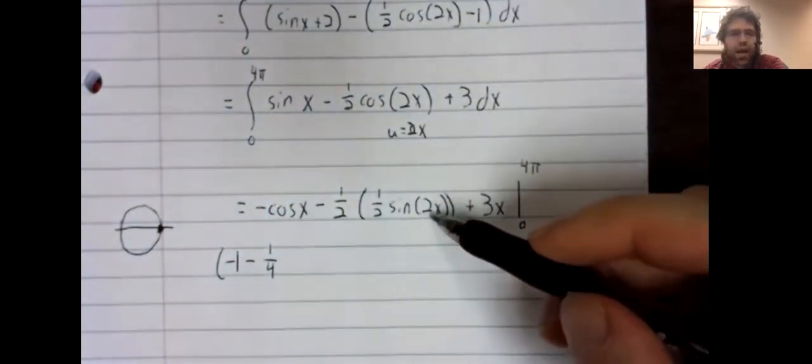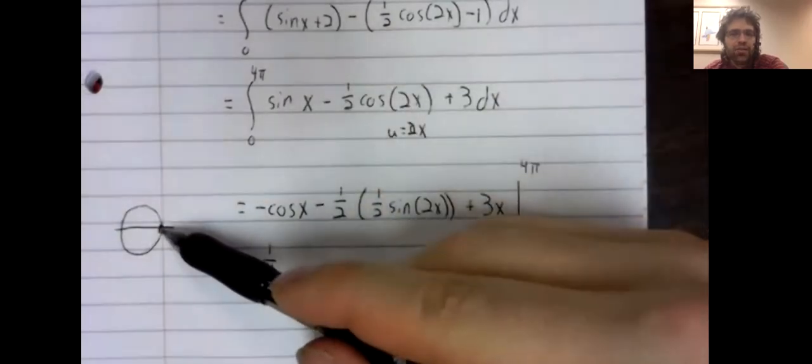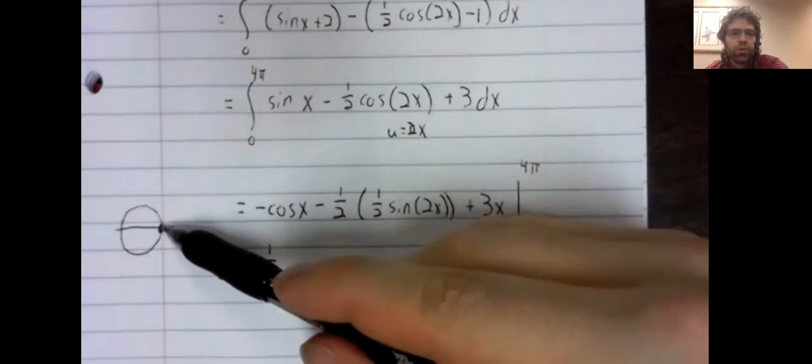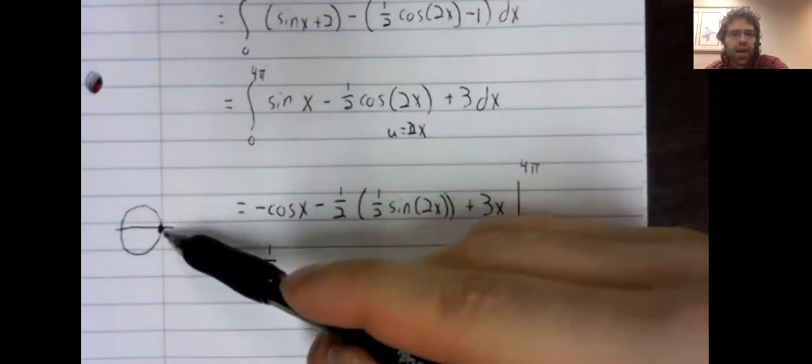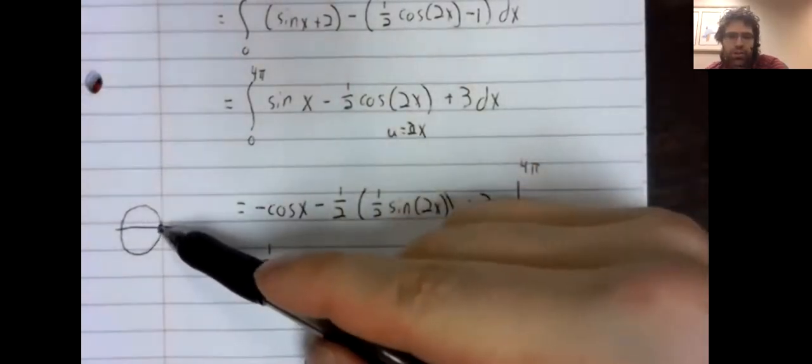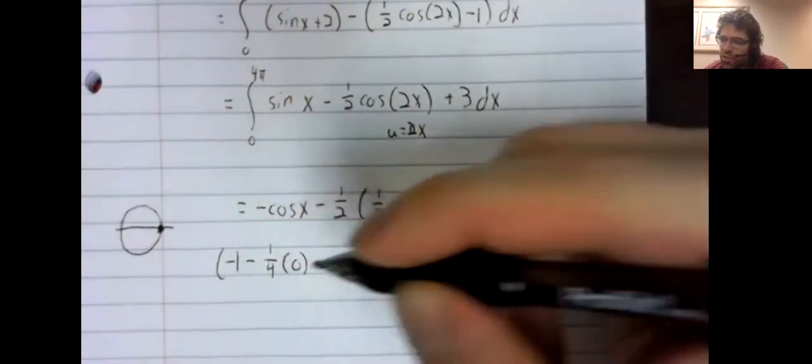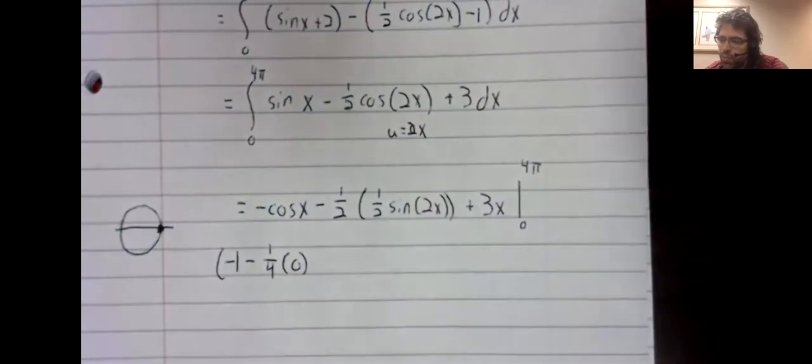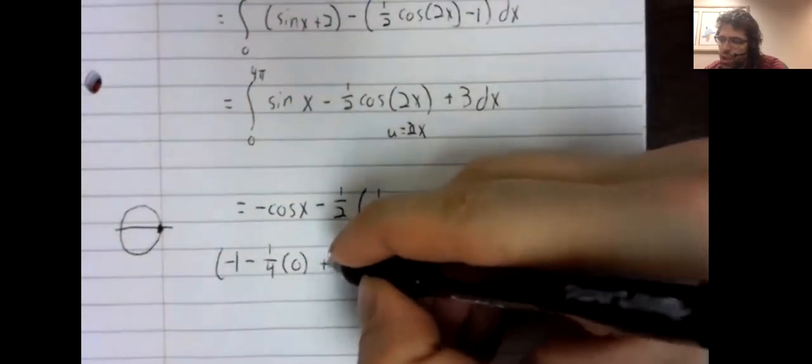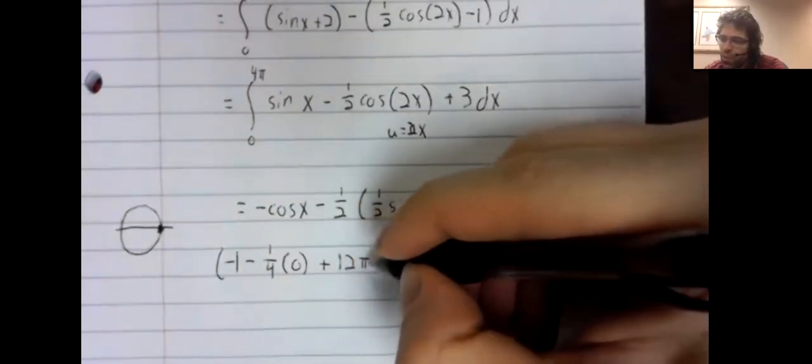The sine of eight pi. Eight pi is still here. Zero, two pi, four pi, eight pi. The sine of eight pi is the y coordinate of this point. The sine of eight pi, which is zero. Plus, stick four pi in here. 12 pi.